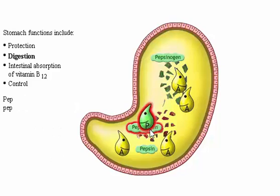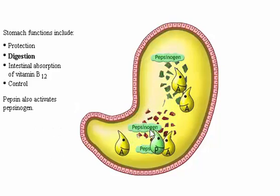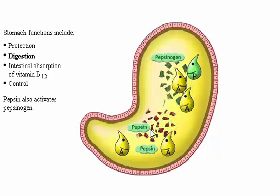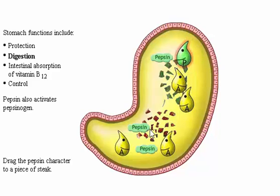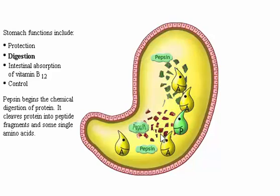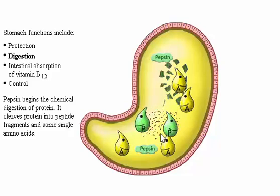Pepsin also activates pepsinogen. Pepsin begins the chemical digestion of protein, cleaving protein into peptide fragments and some single amino acids.